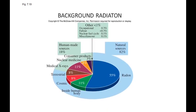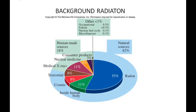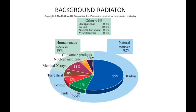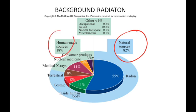There is a certain amount of background radiation all the time — you are never not exposed to background radiation. Most of the background radiation, 82%, comes from natural sources, whereas only 18% comes from human-made sources.